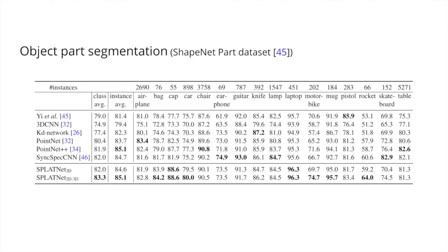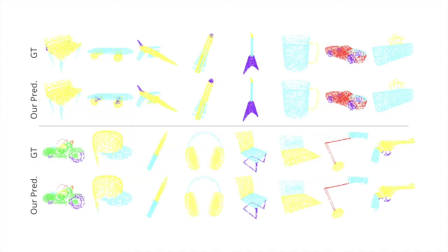On the object part segmentation experiment, we achieve state-of-the-art performance in terms of both class average IOU and instance average IOU. Here we show some visual examples.